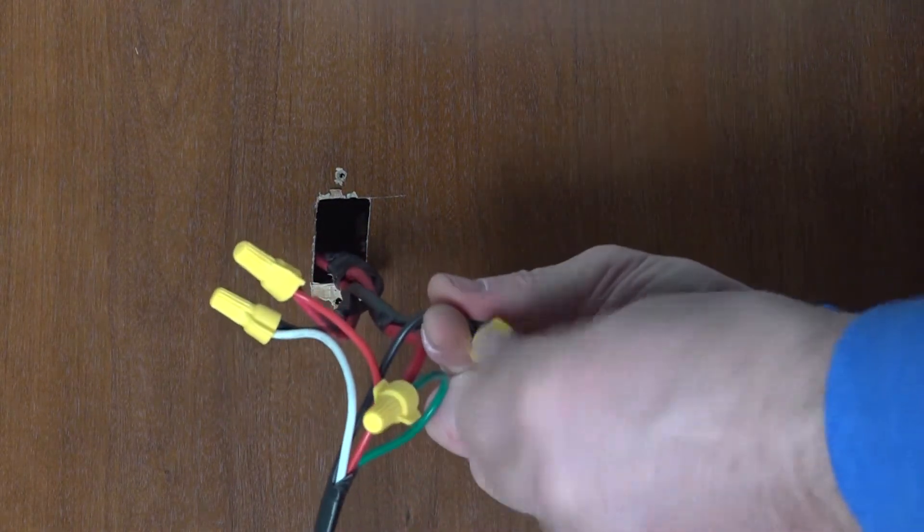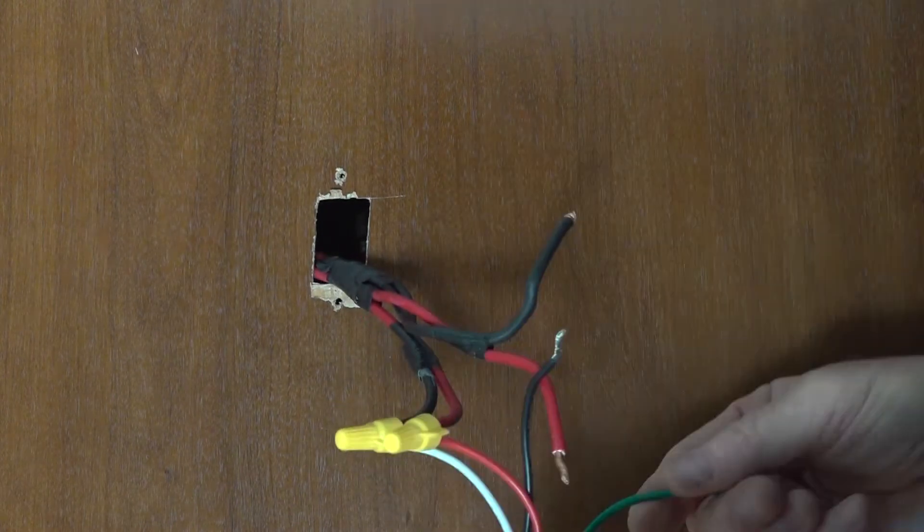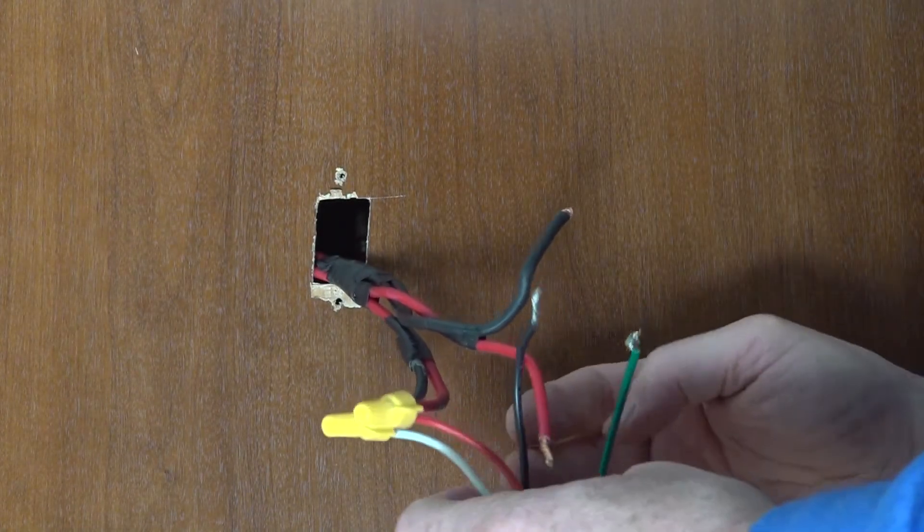Identify the wire nuts splicing the switch to power and ground, then unscrew them. Pull apart the splice, then repeat this step for the output signal wires.